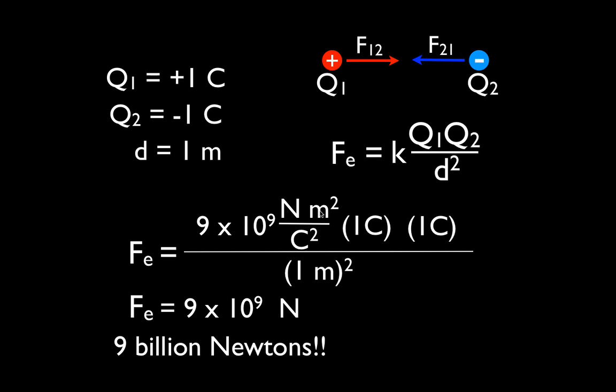So these tiny little things, electrons, if we had a bunch of electrons, one Coulomb of electrons on one side and one Coulomb of electrons on the other side of a meter stick, and they were separated by a meter, you would get 9 billion newtons of force between them.